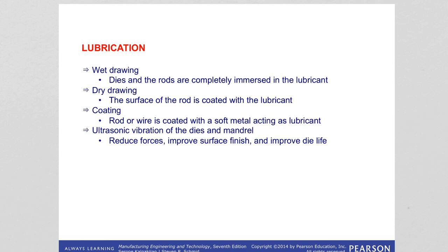Lubrication is essential in drawing to improve die life and surface finish and to reduce drawing forces. Types of lubrication include wet drawing — where dies and rod are completely immersed in lubricant — dry drawing — where the rod surface is coated with lubricant by passing it through a stuffing box — metal coating using a soft metal such as copper or tin as a lubricant, and ultrasonic vibration of dies and mandrels, which improves surface finish and die life and allows higher reductions per pass without failure.